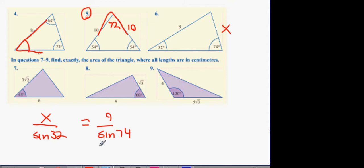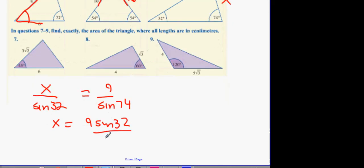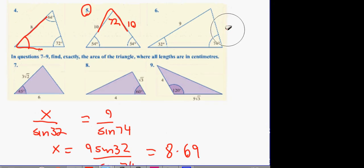Cross multiply and what you get is x equals nine sine 32 divided by sine 74. What is this in the calculator guys? Quickly. 8.69. 8.69. Now guys, this 8.69 goes over here.